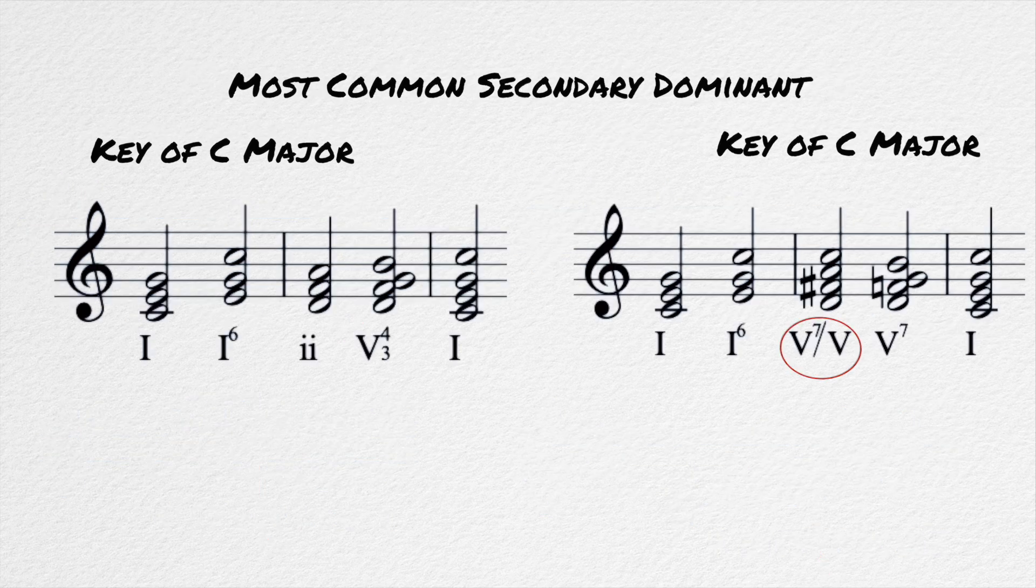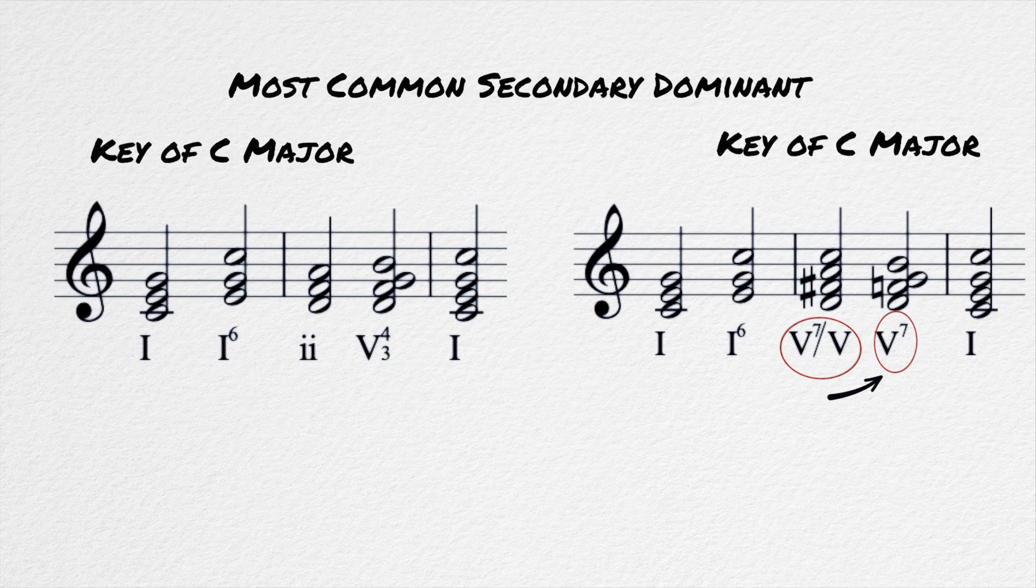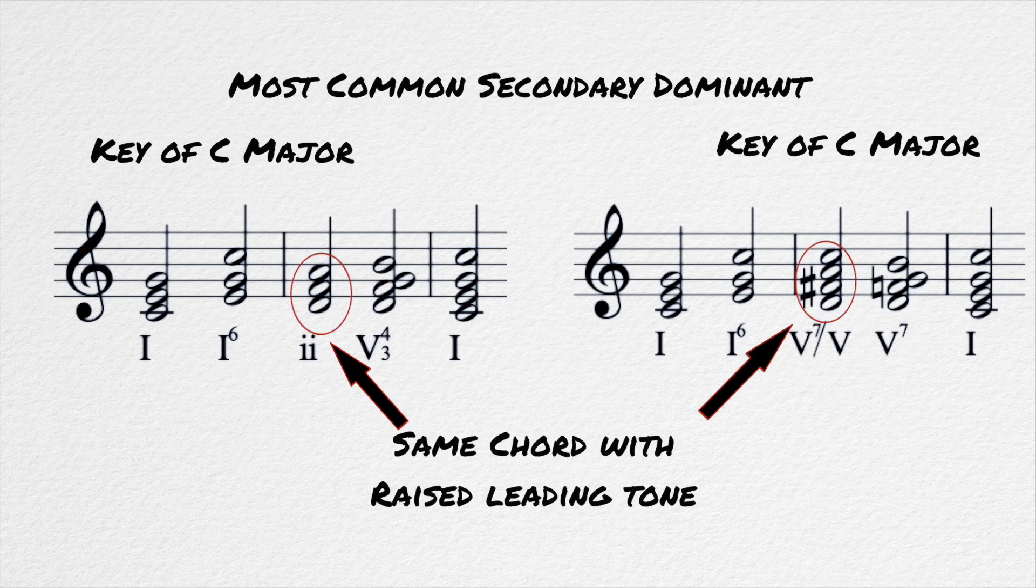The V of V chord is probably the most common. Essentially, it is the dominant of the dominant. It sounds similar to a 2-5-1 progression, but with more kick.